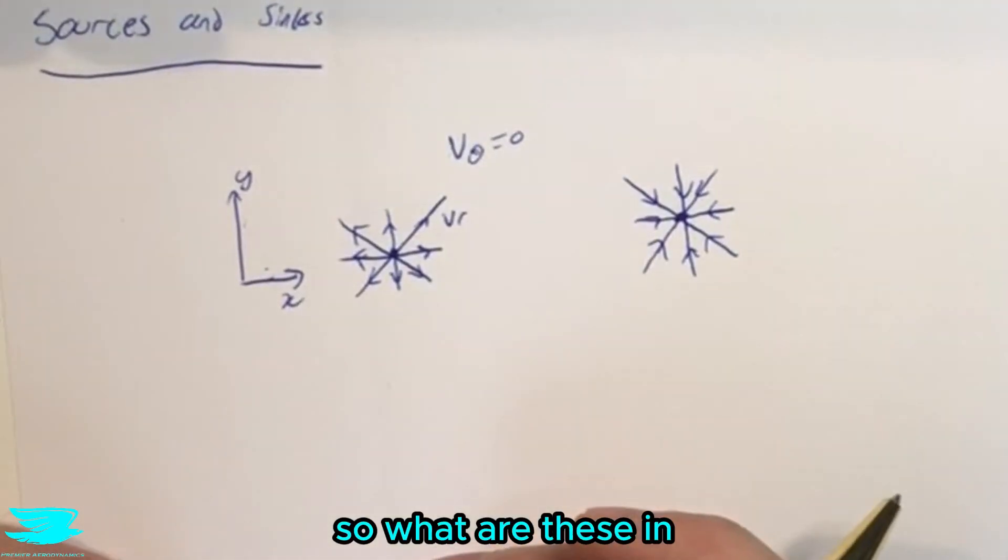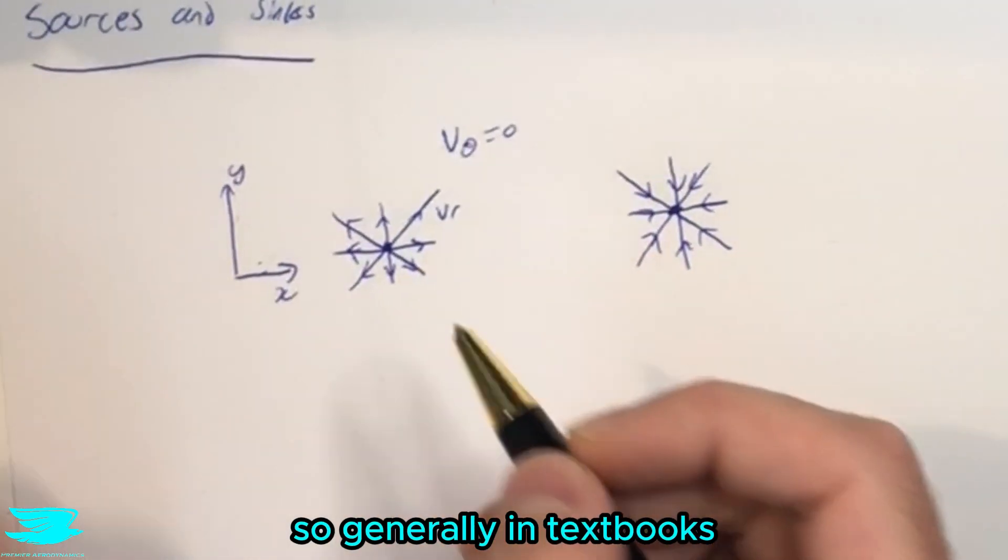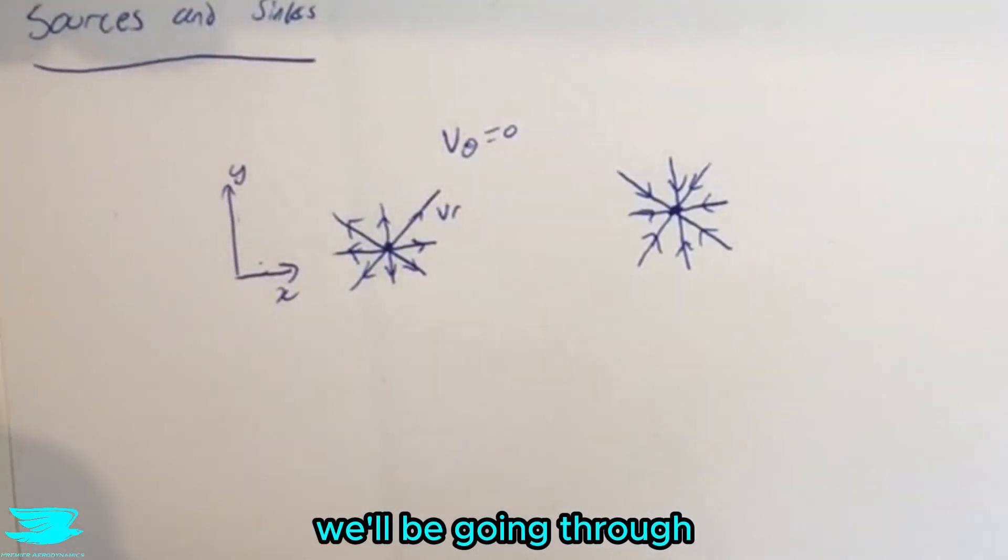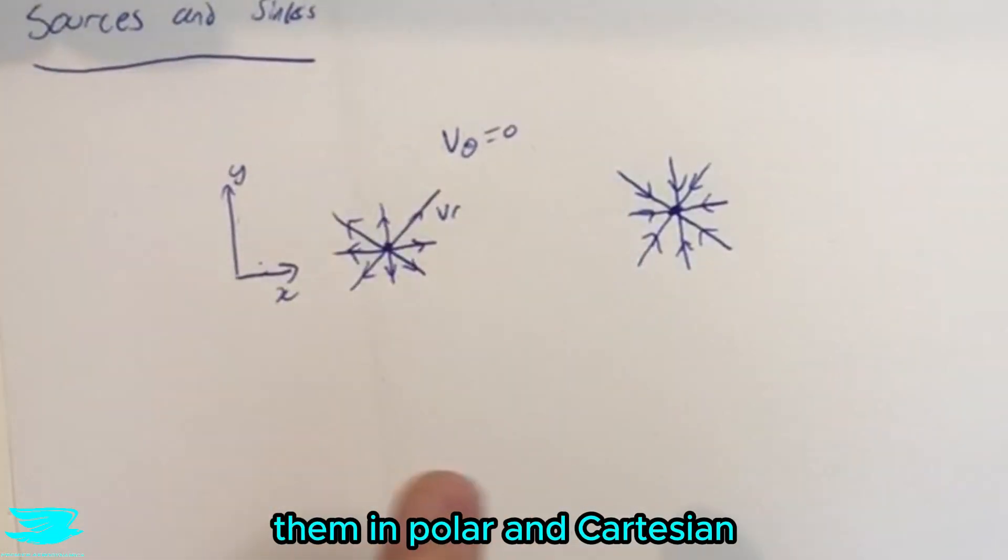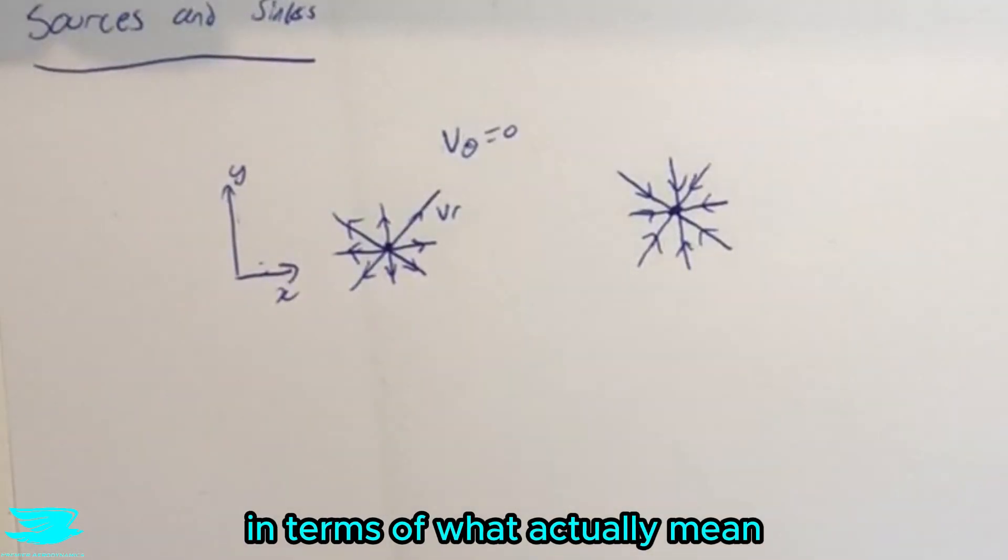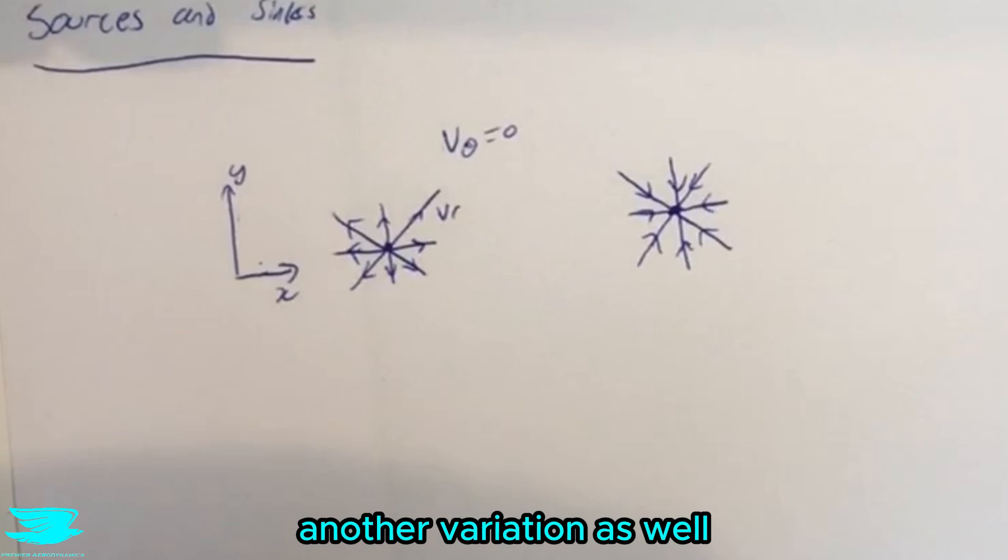So what are these in terms of mathematical equations? Generally in textbooks you'll see them in polar coordinates. I'm going to go through them in polar and Cartesian so we have two different sets of equations. They're exactly the same in terms of what they actually mean, they're just in different coordinate systems. And we'll be going through another variation as well.